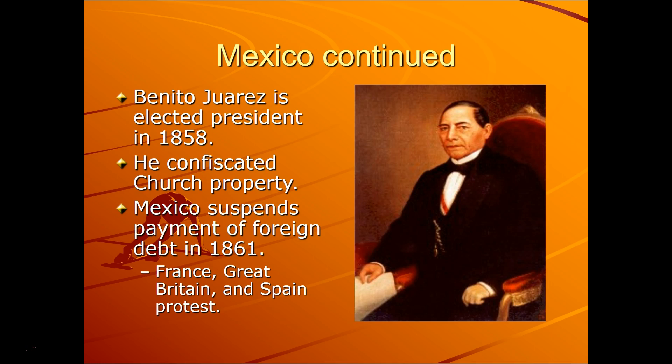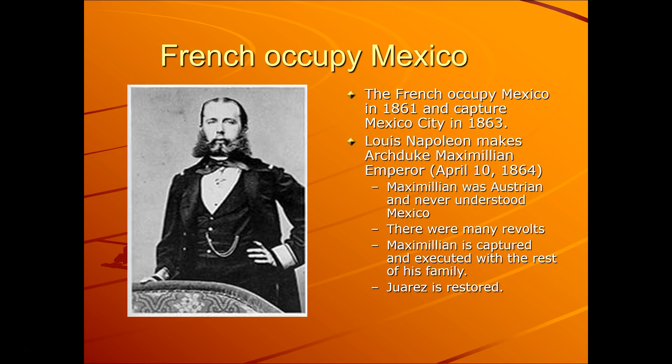Benito Juarez is elected president in 1858 and confiscated church property. Mexico suspends payment of foreign debt in 1861. When you are changing the very power structure of a group of people, you run a risk — but he was trying to get some order, autonomy, and self-reliance, and power back in Mexican hands. Then another foreign invader: the French occupy Mexico in 1861 and capture Mexico City in 1863. Louis Napoleon makes Archduke Maximilian the emperor. The Mexicans had been dealing with these foreign powers for some time, and it was not a good fit. Maximilian and the Austrians never understood Mexico, and there was a lot of revolts. They eventually got rid of him, and Juarez was restored to power.